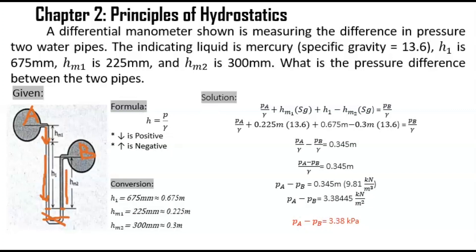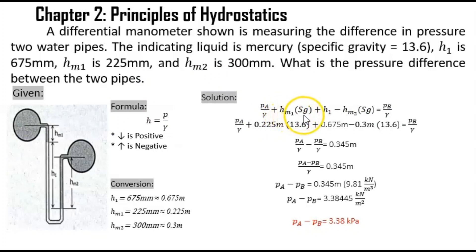As we continue, hm2 is going upward all the way to B, so it is negative. Using the pressure head formula — pressure over specific weight — we now have the equation: pressure A over specific weight plus hm1 times the specific gravity of mercury plus h1 minus hm2 times the specific gravity of mercury equals pressure B over specific weight.